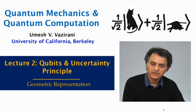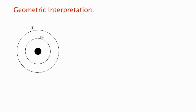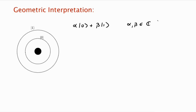In this video we'll talk about a geometric interpretation of quantum bits. A quantum bit is the state of something like an electron in a hydrogen atom, confined to its ground or excited state, which we think of as 0 and 1. The general state of this electron is a superposition: alpha |0⟩ plus beta |1⟩, where alpha and beta are complex numbers, normalized so that |alpha|² + |beta|² = 1.